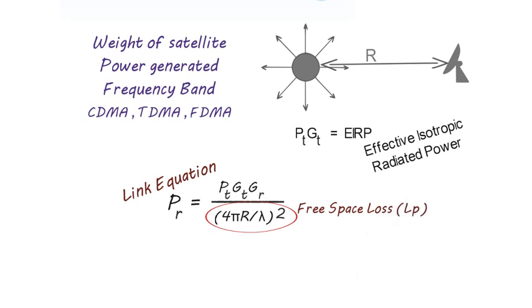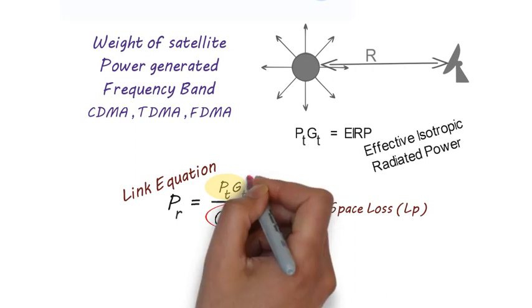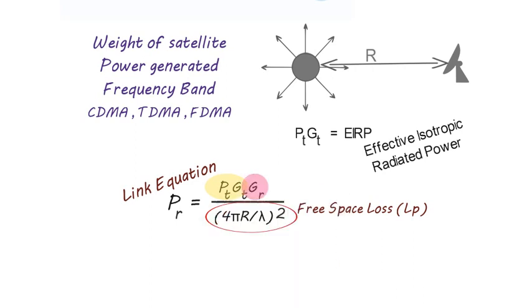So this formula can be shown as the product of EIRP and gain of receiving antenna divided by free space loss. When we convert it in decibel unit, then we will just apply log on both sides and multiply it with 10. So all the product terms will change to addition terms and all the division terms will change to subtraction terms.